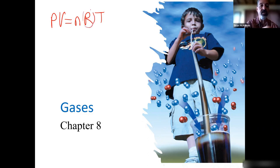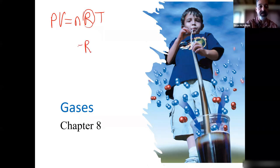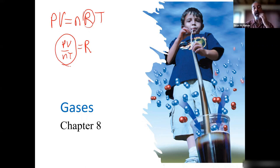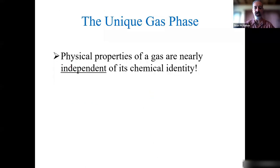If we rearrange the ideal gas law equation PV equals nRT to solve for R — a constant — we get this ratio: PV over nT equals a constant. We can manipulate that quotient to determine all the basic gas laws. But we have to first talk about each of the parameters of gases — pressure, volume, moles, and temperature — so that we can derive this historically and have a better understanding. So let's just go straight into it.